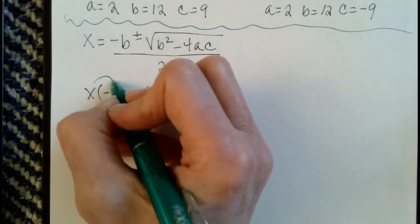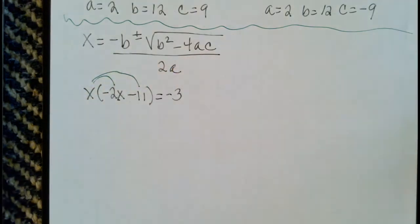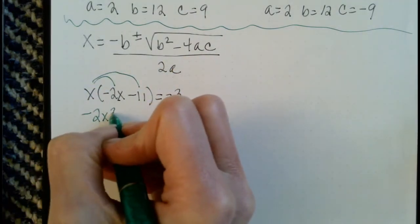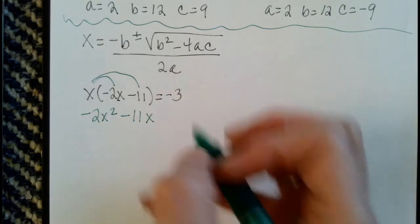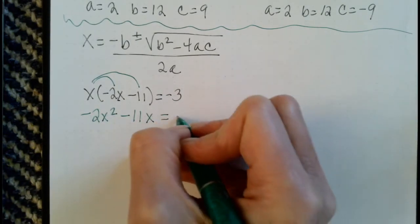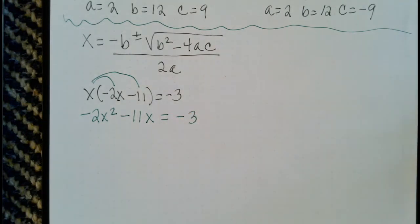But to start, let's distribute here. And we're going to get negative 2x squared minus 11x equals negative 3. So we distributed.